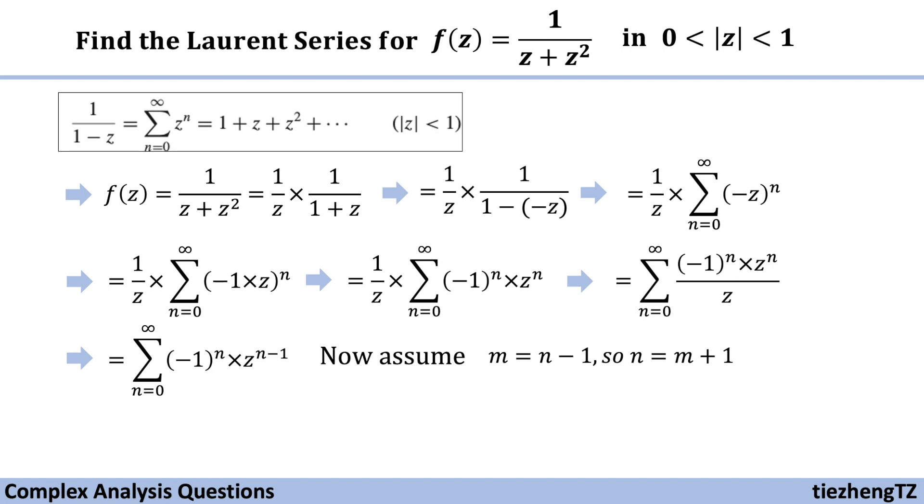If we assume m or k, either value, equals n minus 1, then we have n equals m plus 1. Now we substitute.